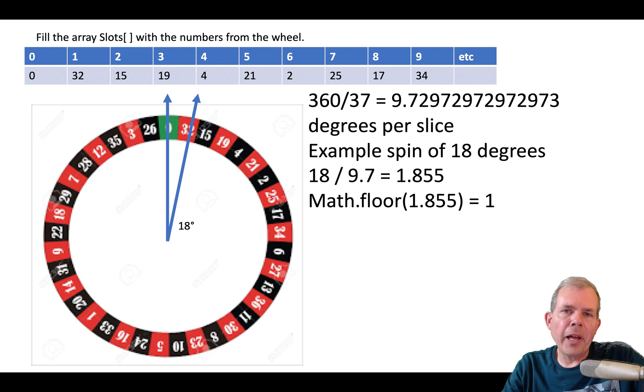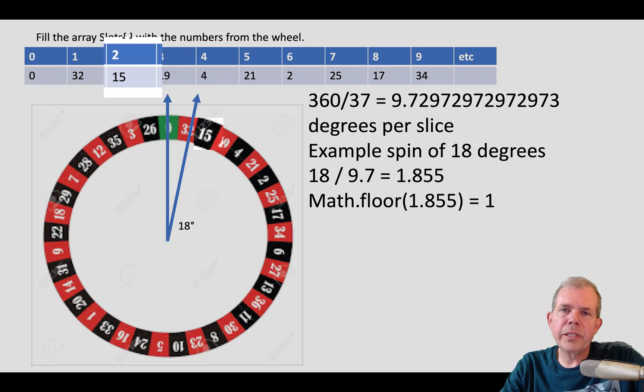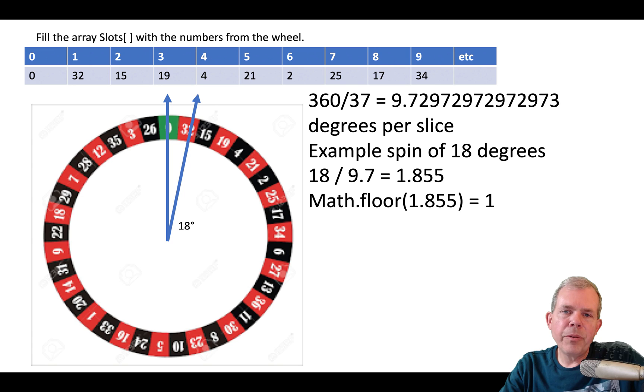And then inside each slot, we can place the value of what that slot holds. So the first item in the array is the green value, so that's 0. The second one is 32, the next one is 15, the next one is 19. And we just go all the way around the wheel and provide a value for each one of these items in the array.